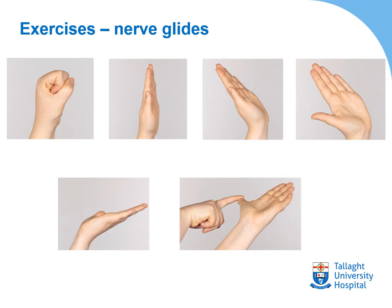The second set of exercises are to keep the nerve moving within your carpal tunnel. You start with a closed fist and a bent thumb. Next, straighten your fingers and straighten your thumb. Then bend your wrist backwards. Then stretch your thumb out to the side. Then turn your hand so your palm is up to the ceiling. And then, using your other hand, gently stretch your thumb backwards.